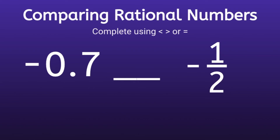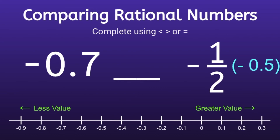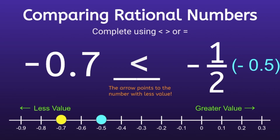On to the final example. We have negative 0.7 and negative 1 half. Let's pull up that number line. You can notice on the number line that I only have decimals. The good news is it's pretty simple to convert a fraction to a decimal — all you have to do is divide the numerator by the denominator. 1 divided by 2 is equal to 0.5, so negative 1 half as a decimal would be negative 0.5. Now since they're both decimals, we can graph them on a number line. We can see that negative 0.7 is further to the left, and the arrow should always point to the number with less value. So in this one our arrow will point to the left, since negative 0.7 is less than negative 0.5.